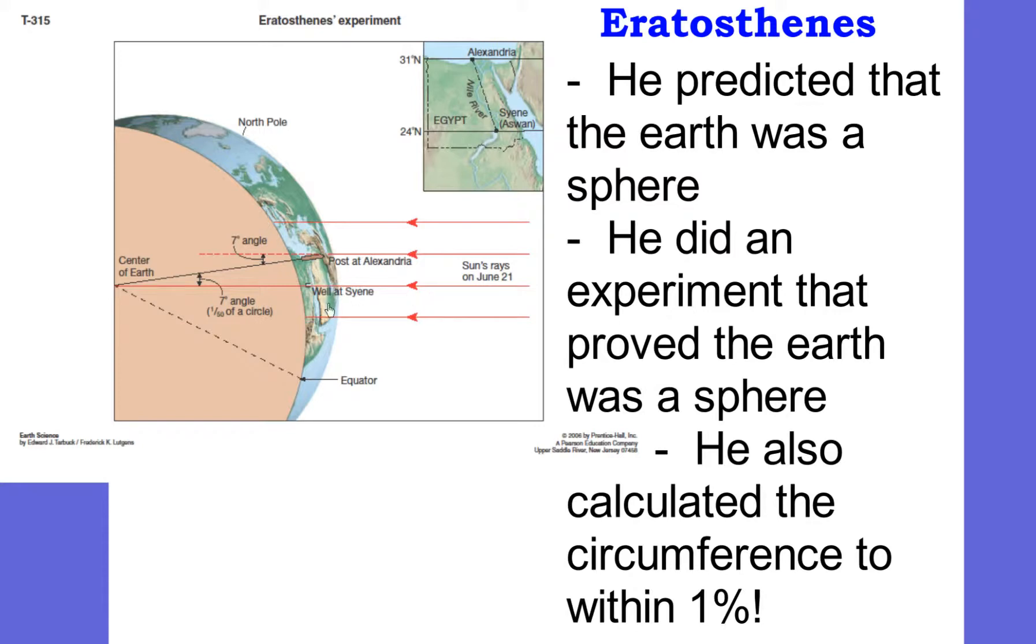He did it using shadows, the sun's shadow. He knew that on June 21st—we're going to talk about what that date means in this unit—he knew that at this place Syene, the sun rays would go straight down because you could see the bottom of the well, water at the bottom of a well. And at relatively nearby Alexandria, the sun was not straight up and down. It was at an angle, seven percent angle. So he used this to do some geometry and got the circumference of the earth. Pretty ingenious.